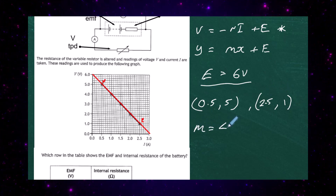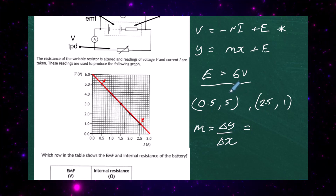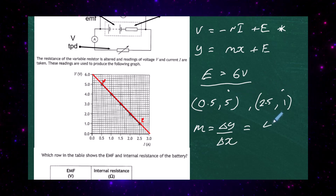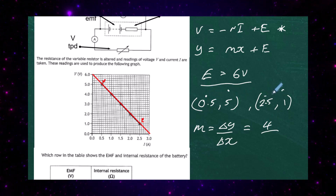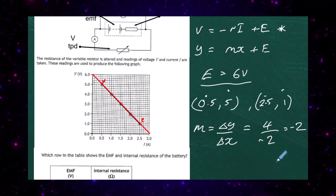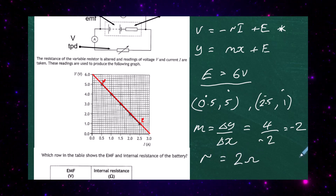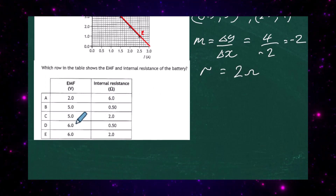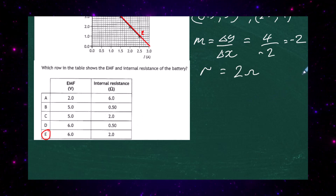The gradient is the difference in y-coordinates divided by the difference in x-coordinates. So we get 5 minus 1 over 0.5 minus 2.5, which gives 4 over minus 2, a gradient of minus 2. The graph is sloping downwards, confirming the negative gradient. Since M equals minus 2, the internal resistance equals 2 ohms. So our answer is response E: EMF 6 volts, internal resistance 2 ohms.